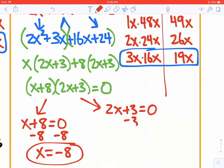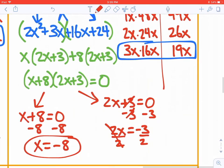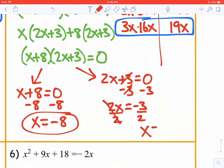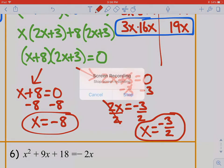We need to subtract 3, bring down 2x equals negative 3, and then divide by 2. So now we get x equals negative 3 halves, and we can just leave it like that. So these are our roots, solutions, x-intercepts, or zeros. And that's it for the first three examples.